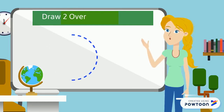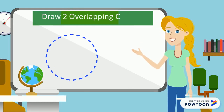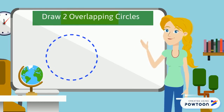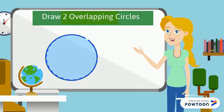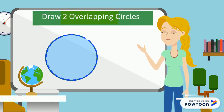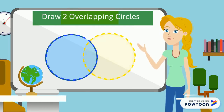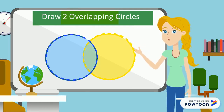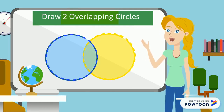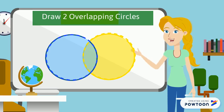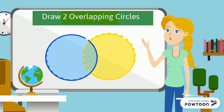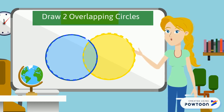Now I'm going to organize my information. To organize it I need to draw two circles that overlap. The overlapping part is really important in a Venn diagram. If they don't overlap, you don't have a Venn diagram.